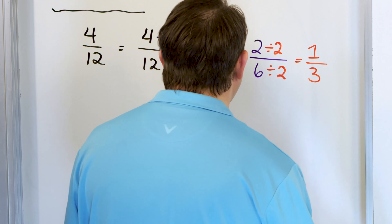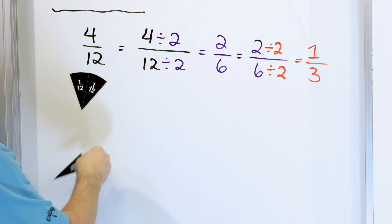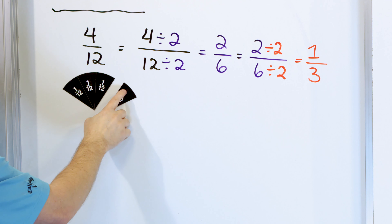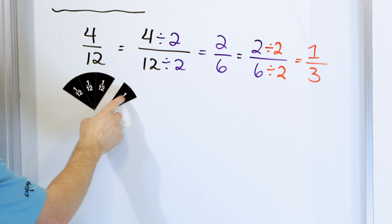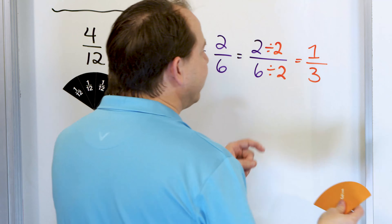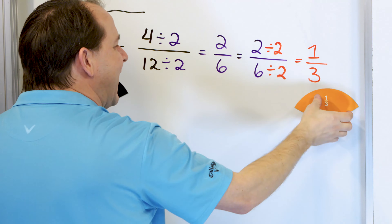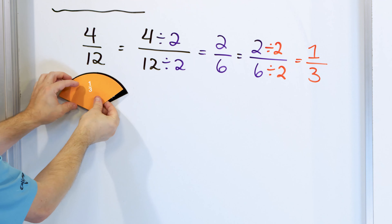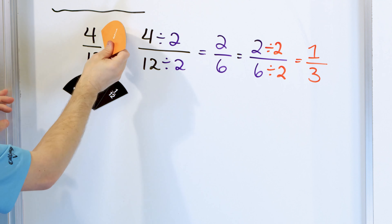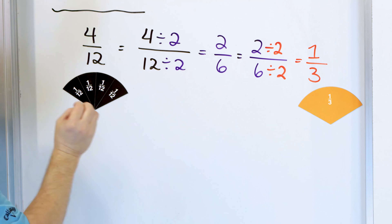Let's see if this is even true. Here's one-twelfth, two-twelfths, three-twelfths, four-twelfths — this is the actual amount of pizza. Notice the slices when you cut a pizza into twelve pieces are pretty small. Now let's go all the way to the answer. We said the answer was one-third. These two fractions, even though they look totally different, actually represent the same thing. One-third is exactly the same thing as four-twelfths — that's why they're equivalent.